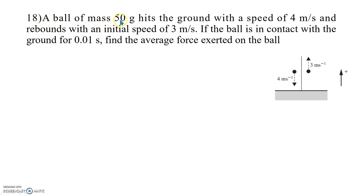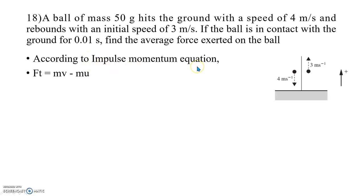A ball of mass 50 grams hits the ground with a speed of 4 m/s and rebounds with an initial speed of 3 m/s. If the ball is in contact with the ground for 0.01 seconds, find the average force exerted on the ball. The given data: mass m = 50 grams, initial speed = 4 m/s, final speed after rebound = 3 m/s, and contact time = 0.01 s. Applying the impulse-momentum equation: F·t = m·v₂ − m·v₁.